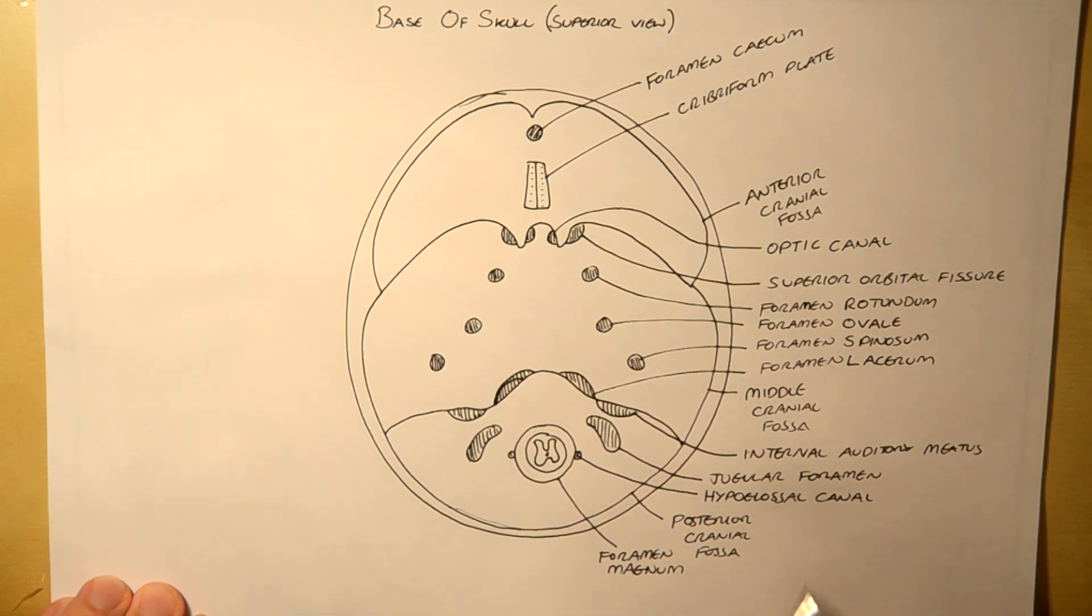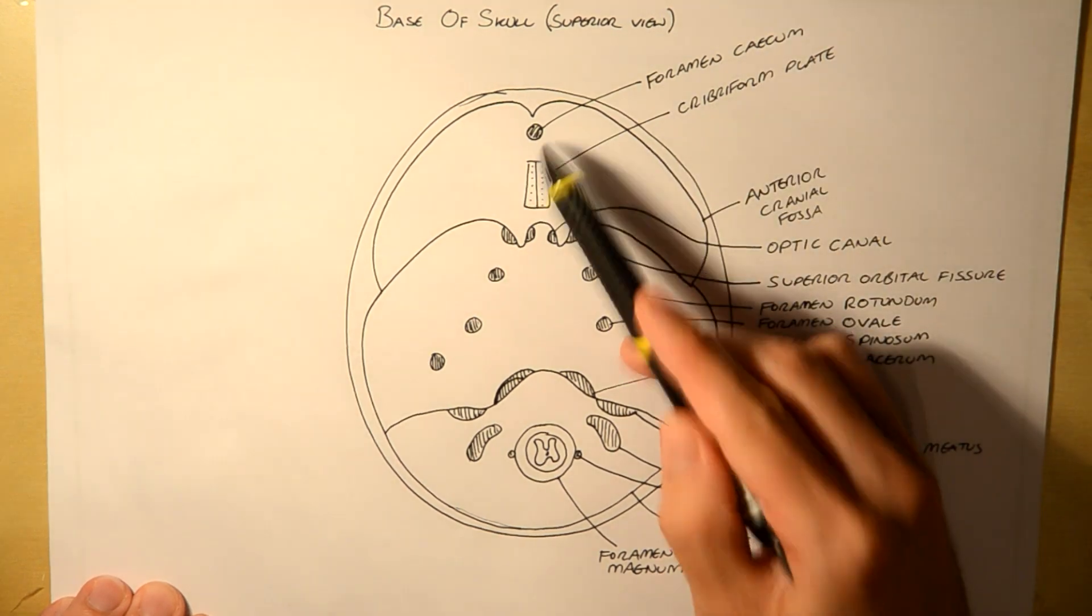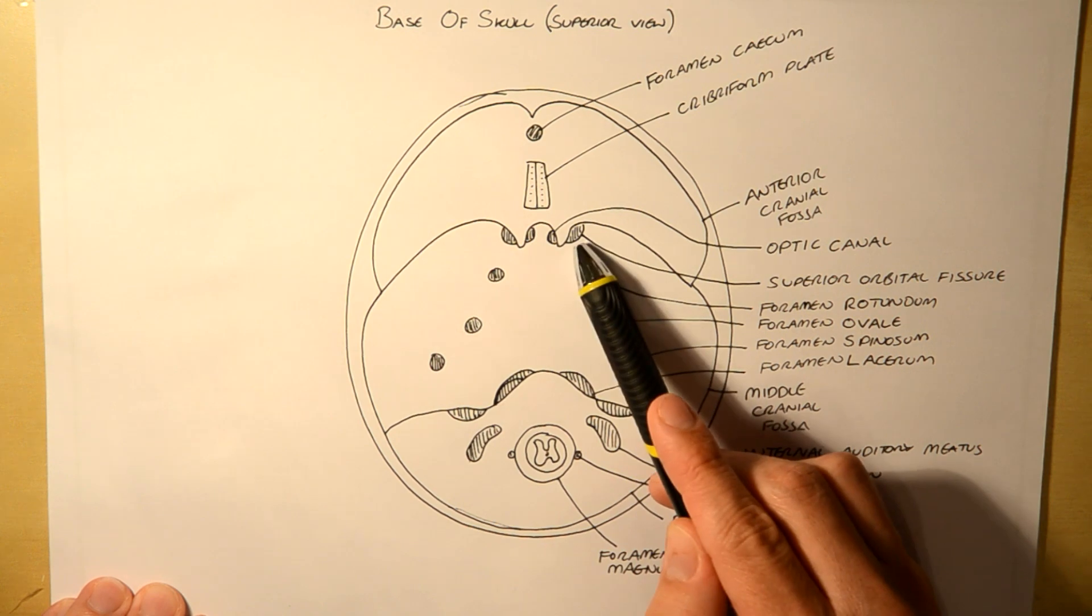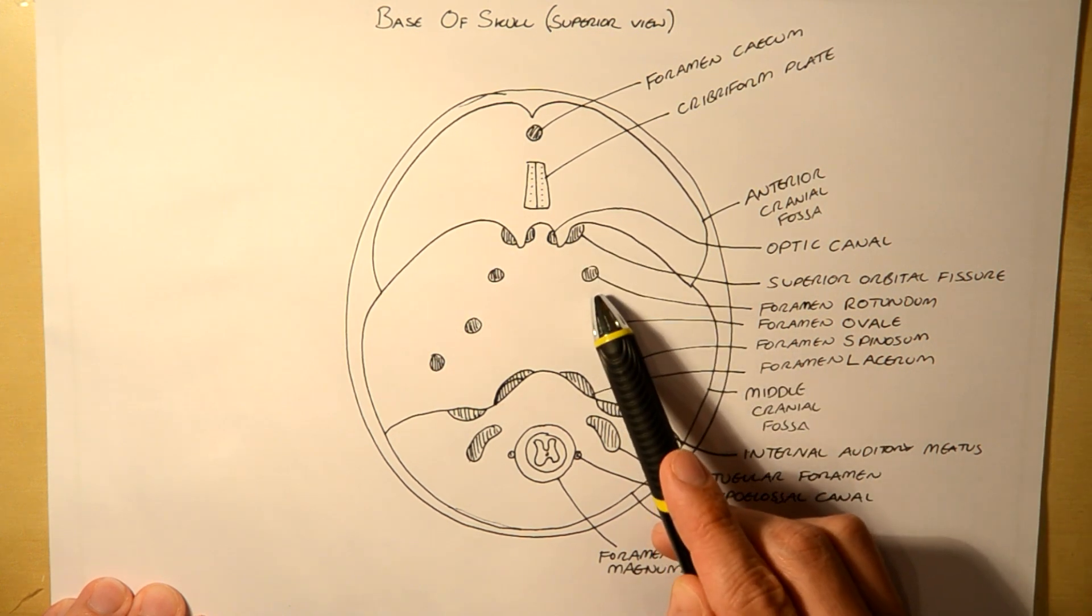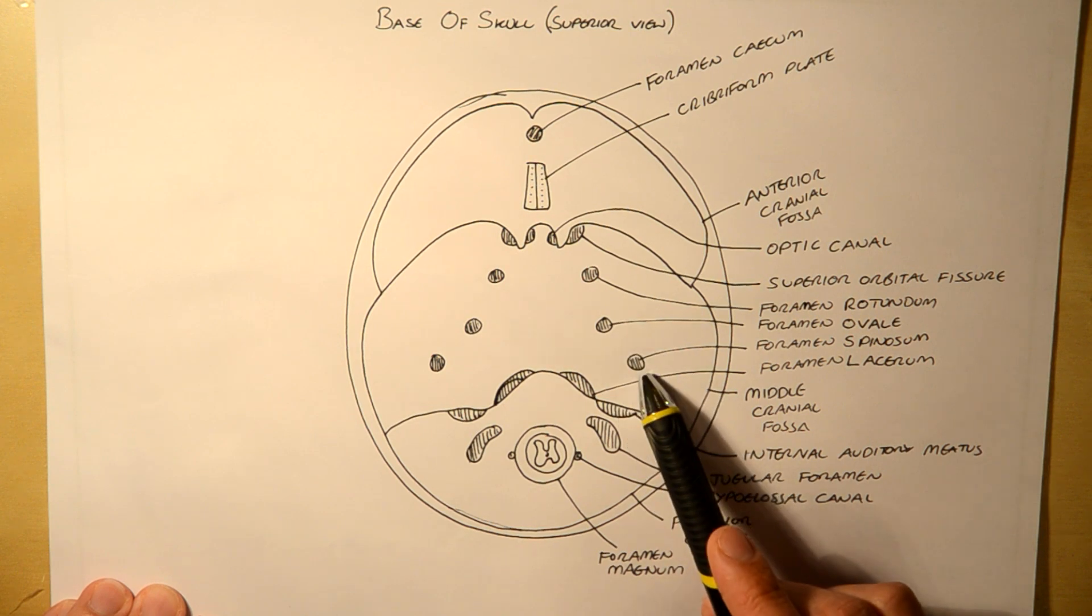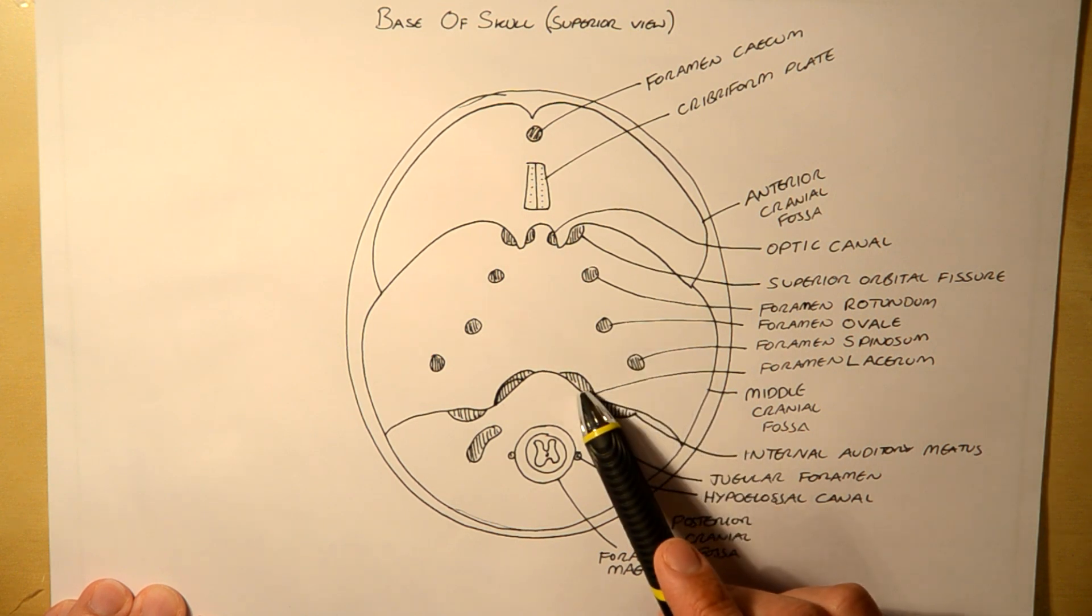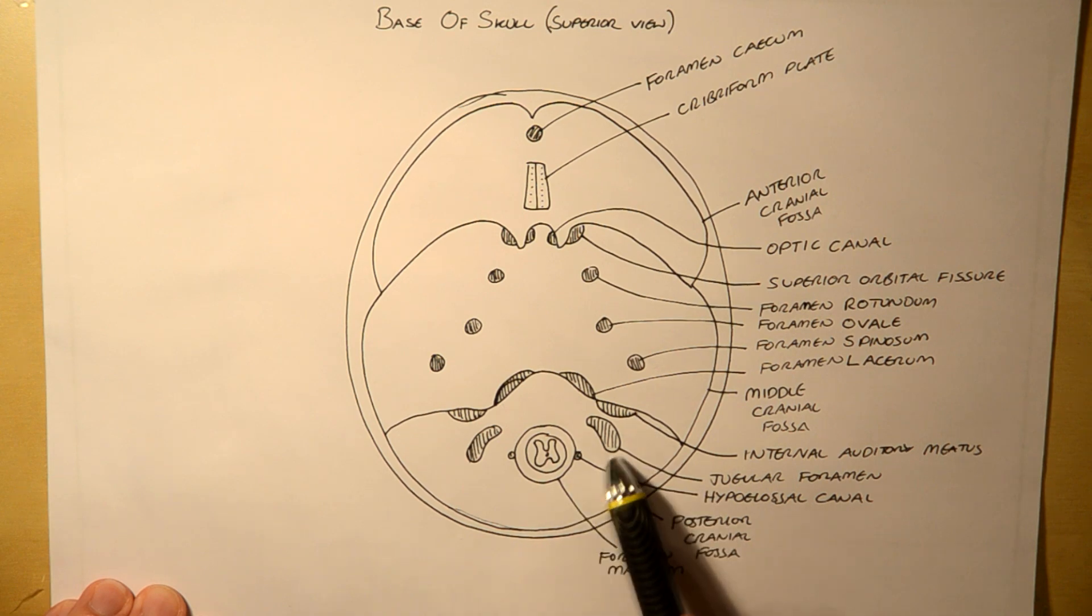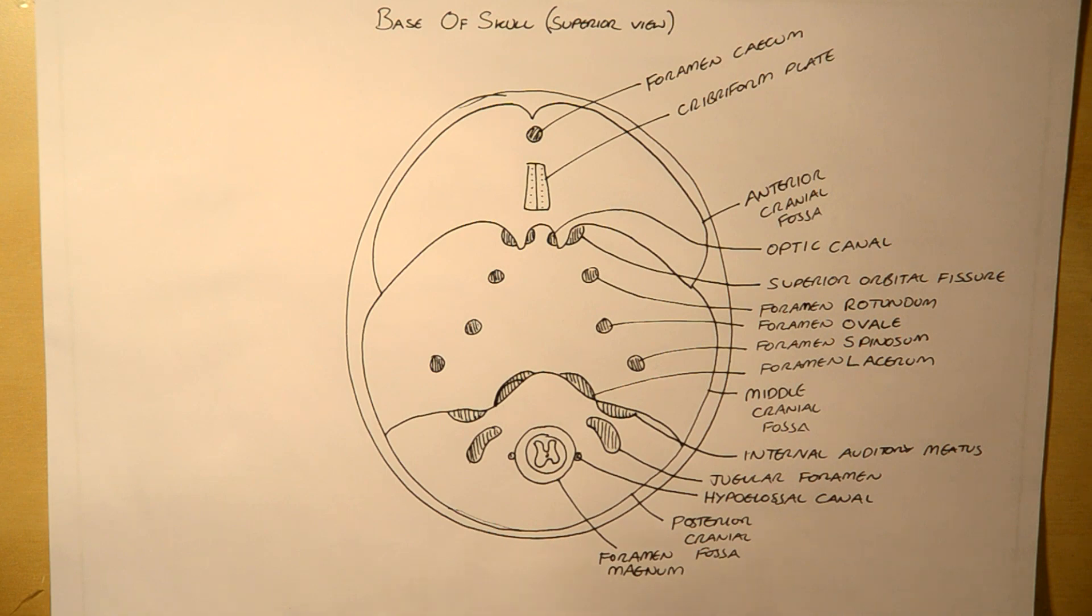So, foramen cecum, cribriform plate, optic canal, superior orbital fissure, foramen rotundum, foramen ovale, foramen spinosum, foramen lacerum, the internal auditory meatus, the jugular foramen, hypoglossal canal, and the foramen magnum. Now let's look at the cranial nerves.